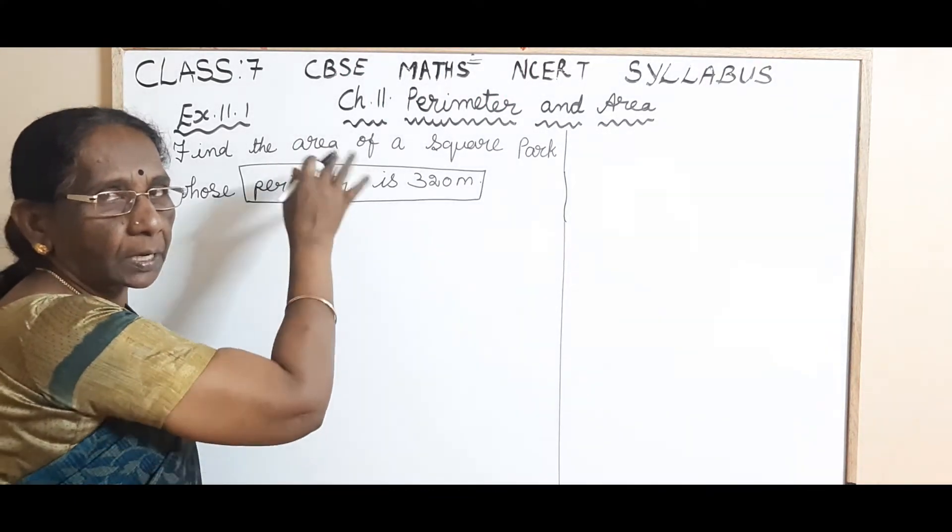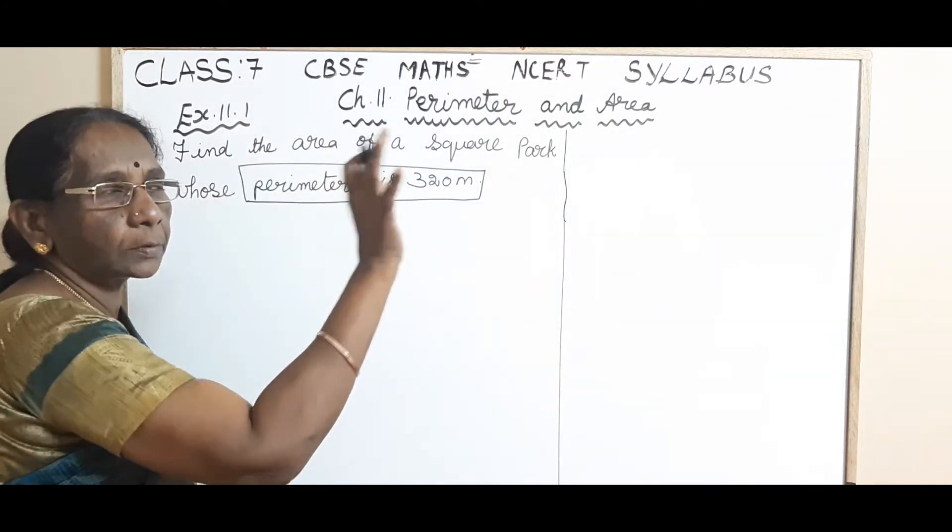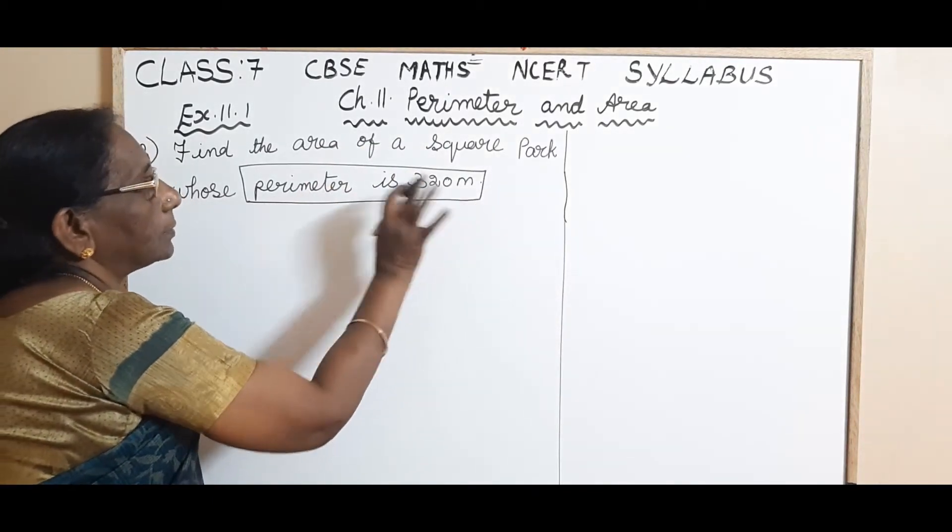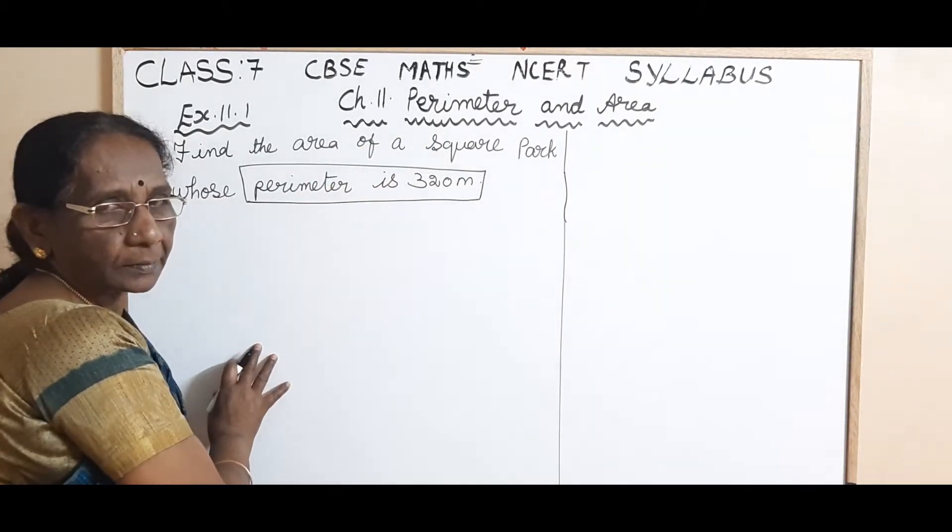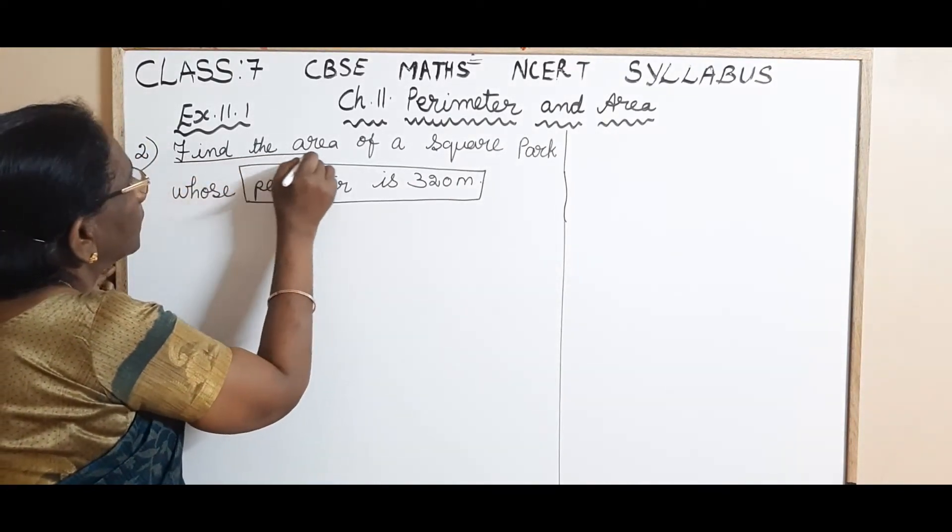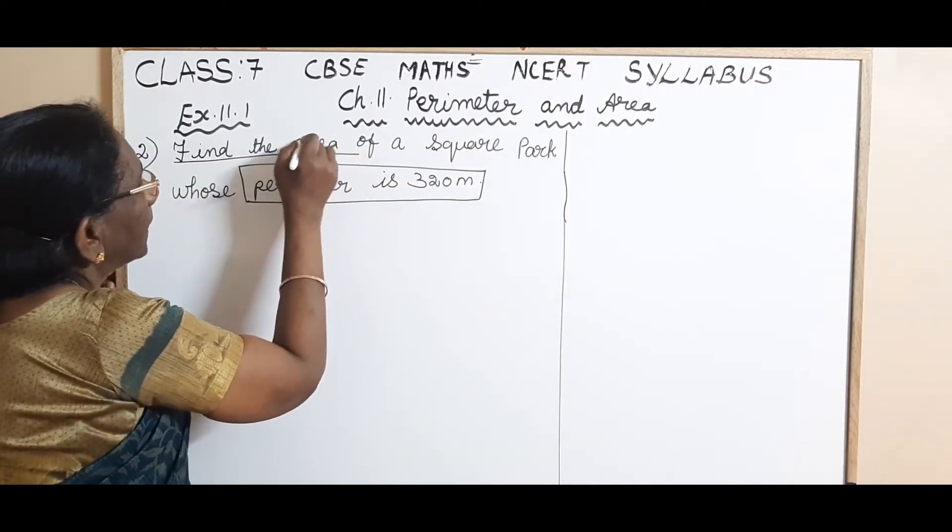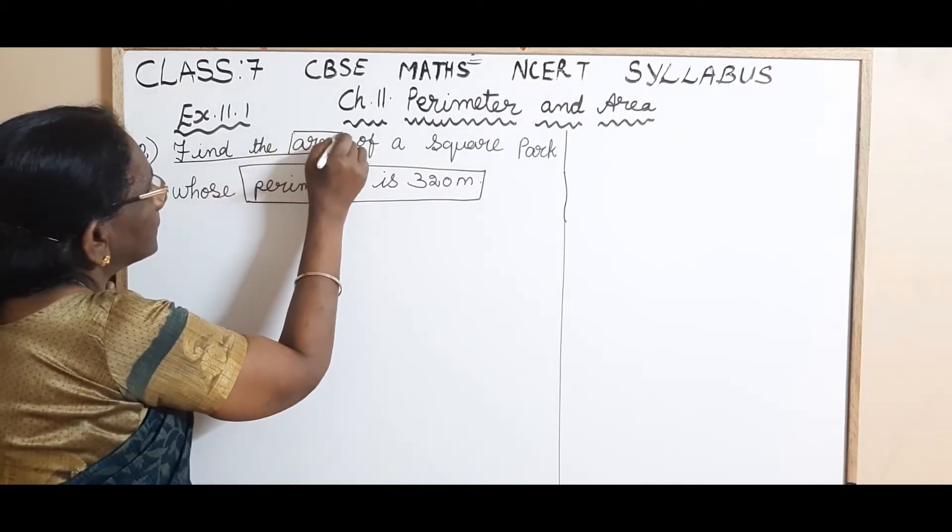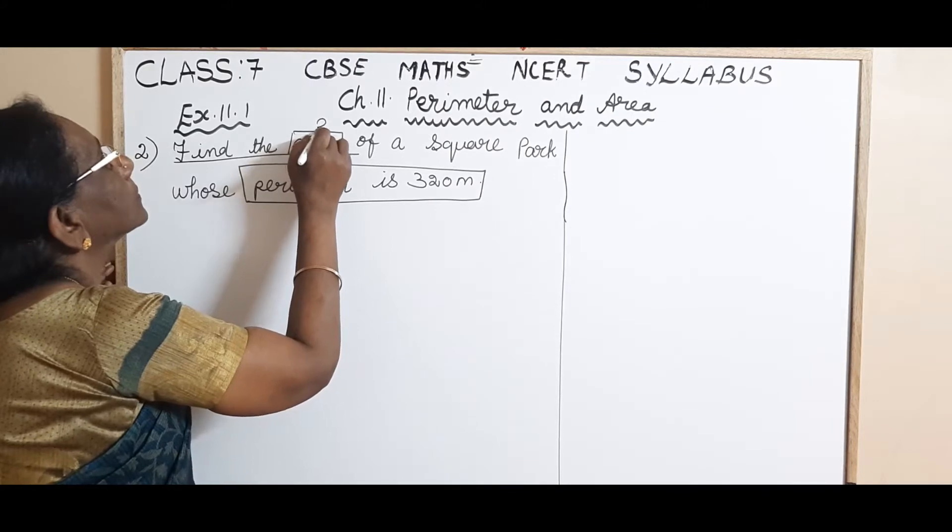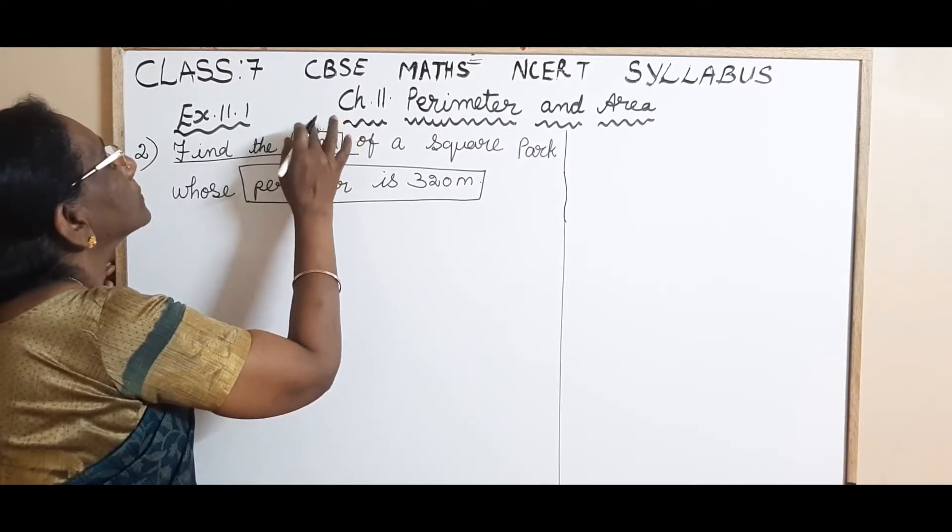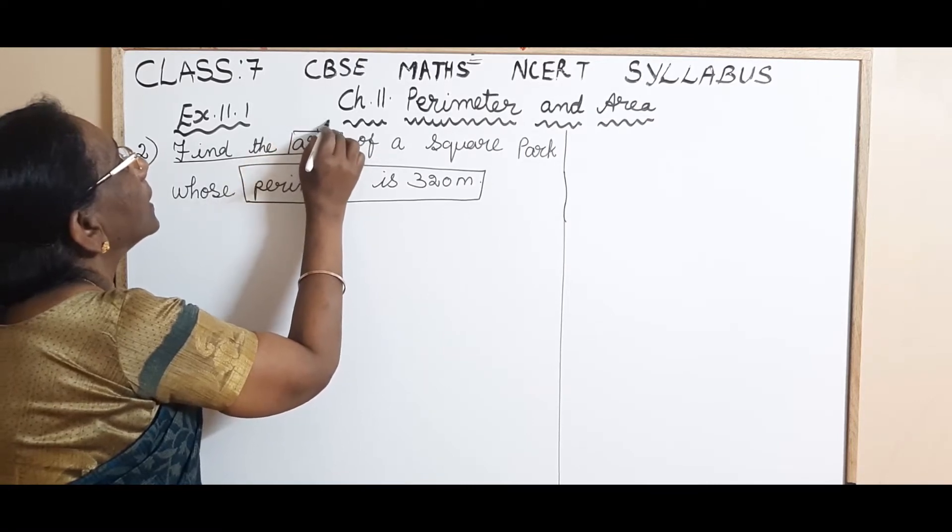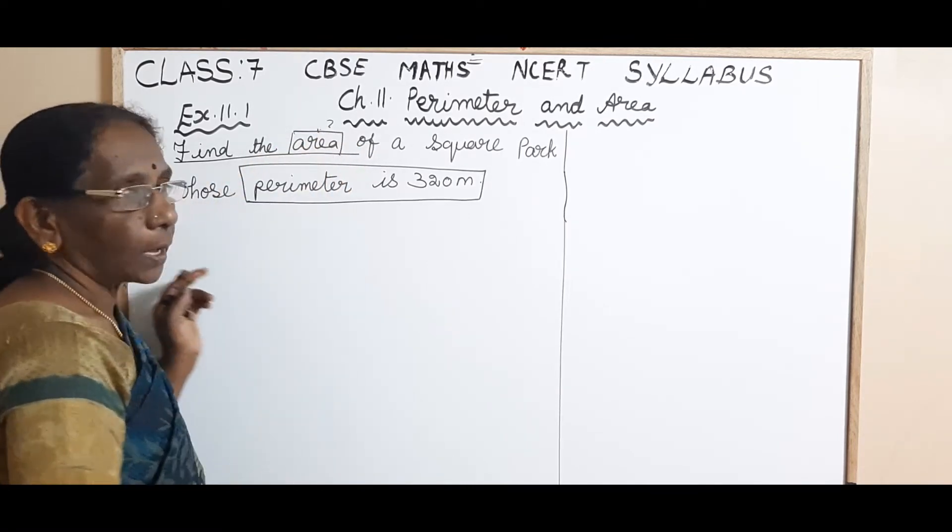The shape. What is the shape given in this question? Square. It's a square park. And its perimeter is given. And what are you supposed to find? You have to find the area. This is the question mark. You have to find the area. What is the area of the square park?